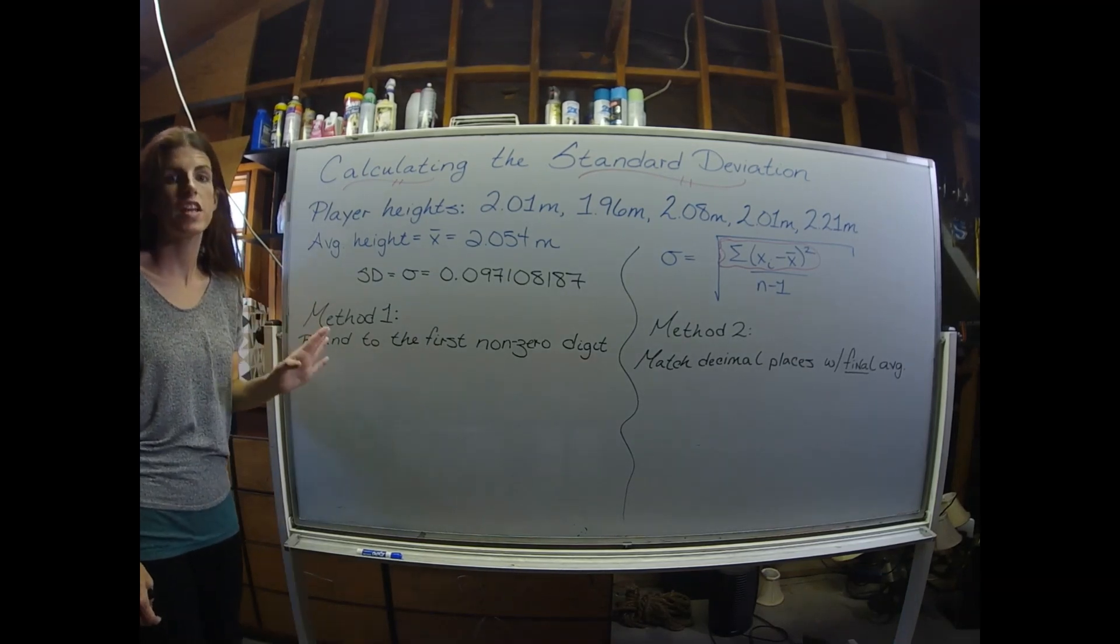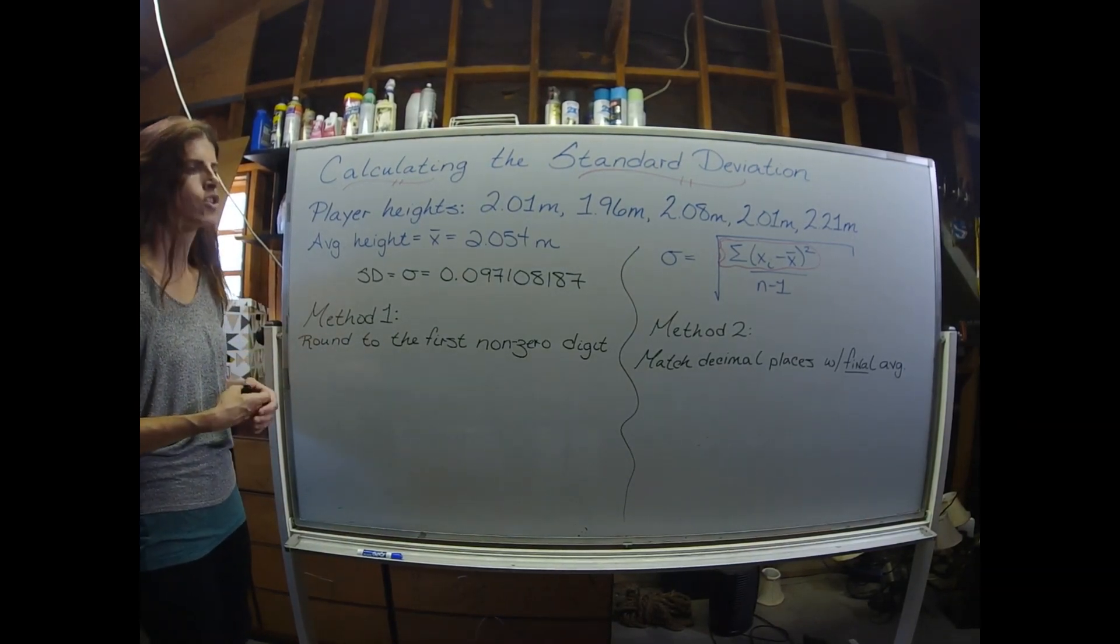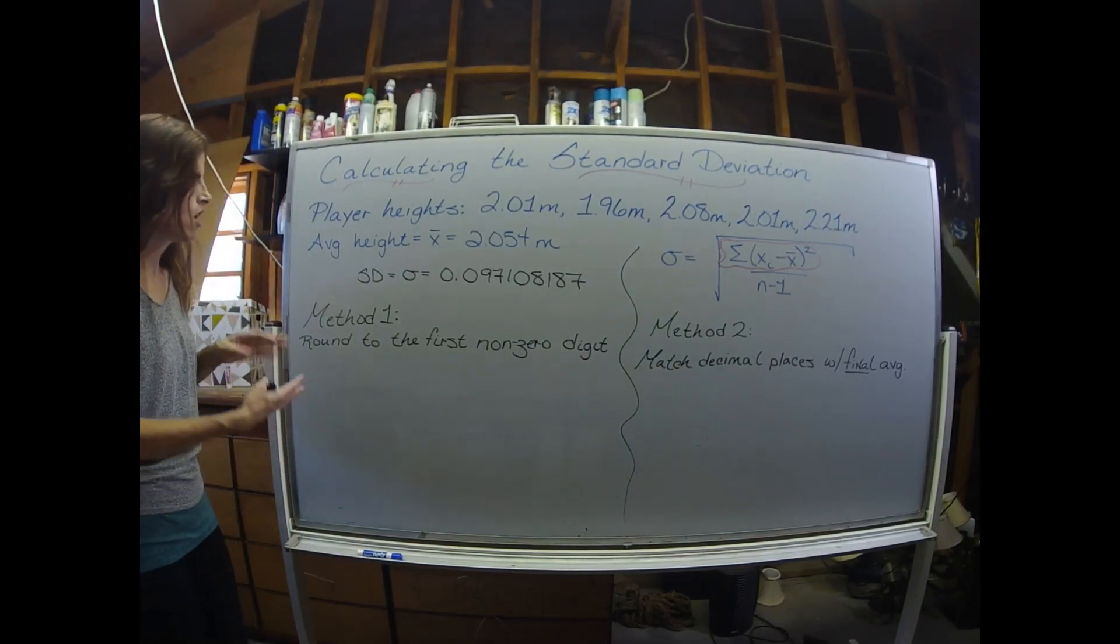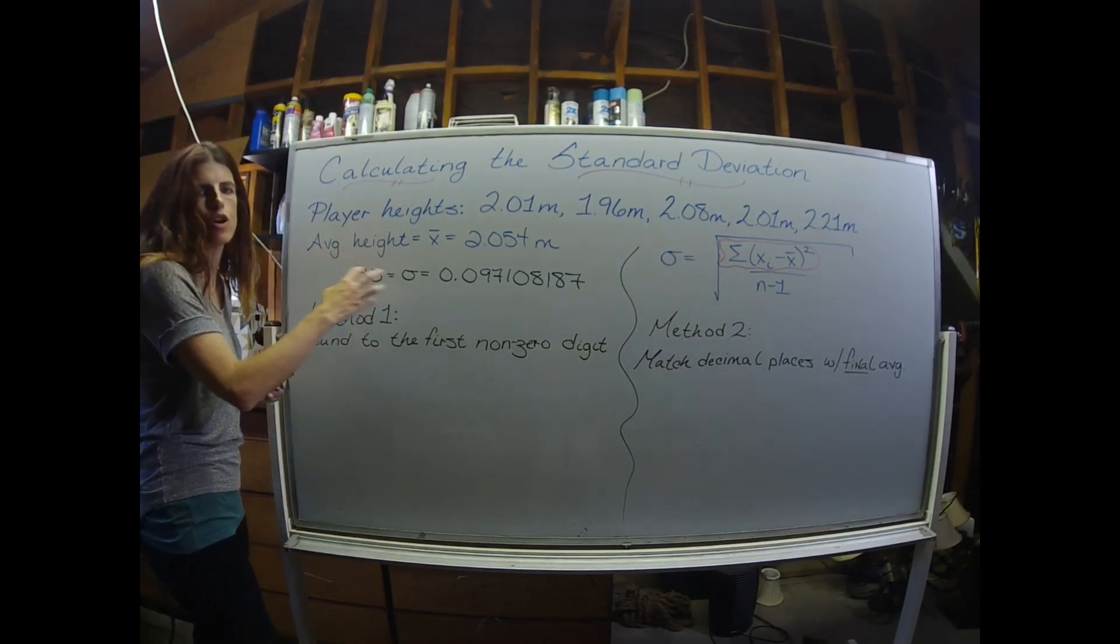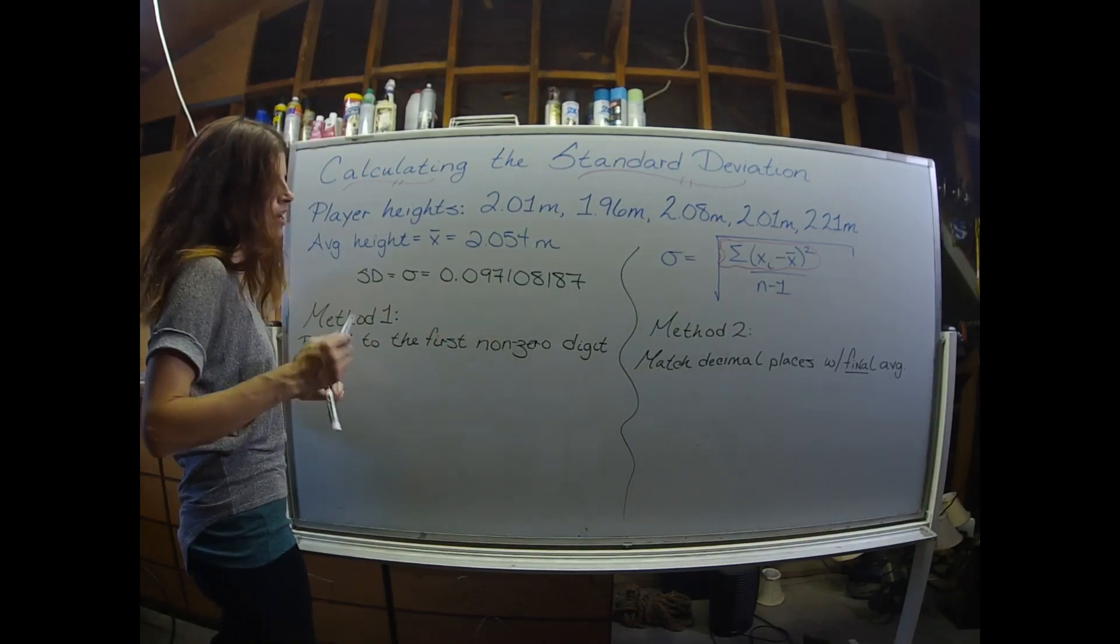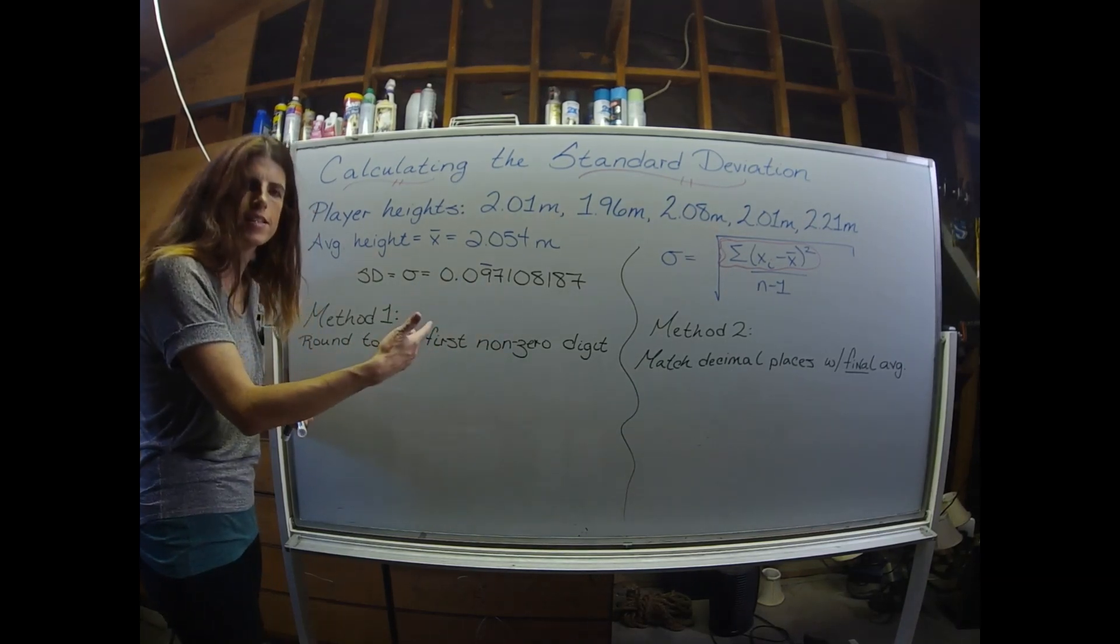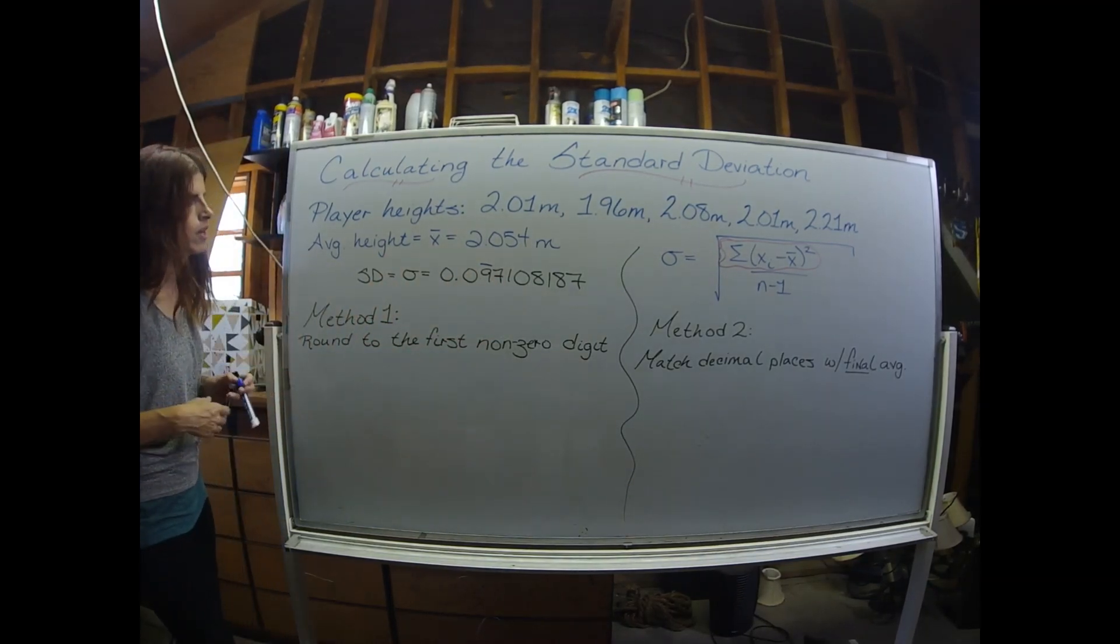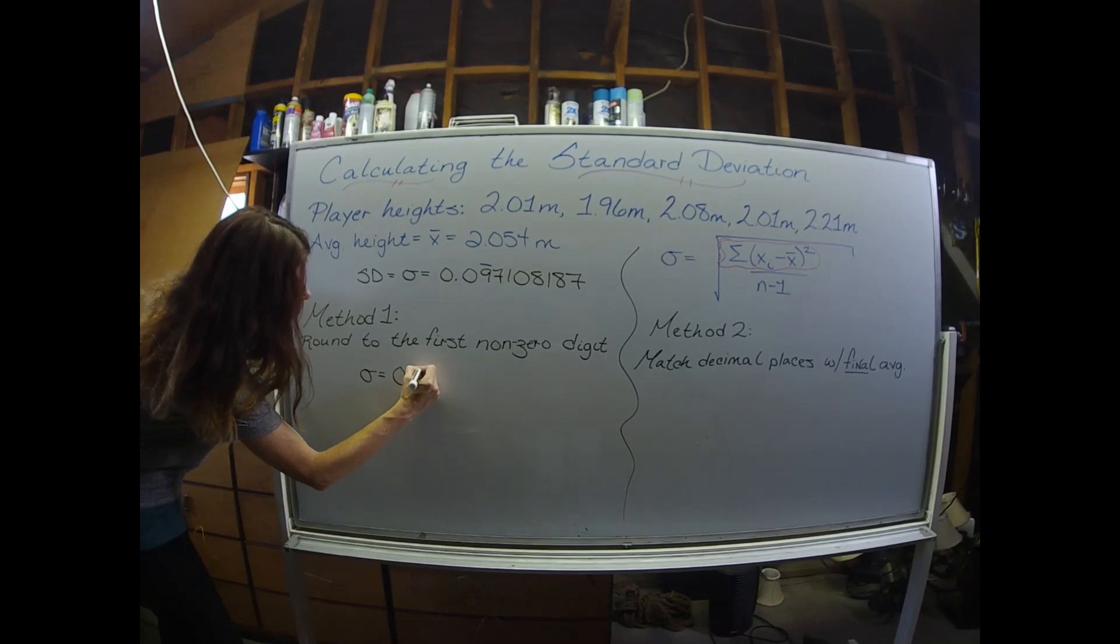So now we have our standard deviation with a ridiculous number of sig figs. There's two methods, two approaches that I've seen at the college for rounding and deciding how many sig figs to use with our standard deviation. The first method is to round to the first non-zero digit. So to do that, you start on the larger side of the number. I have a 0, I have a 0, and then I have a 9. So 9 is my first non-zero digit. However, immediately following the 9 is a 7. So I'm going to have to round up that 9 because I have a 7 next to it. My standard deviation then is going to become 0.1 meters.